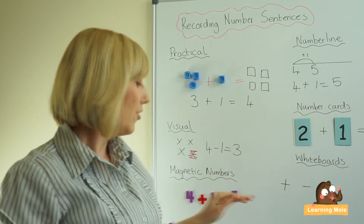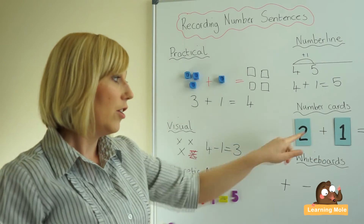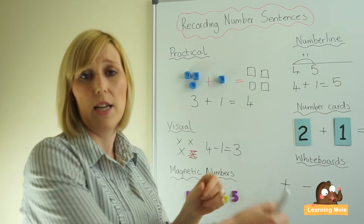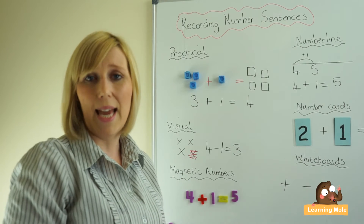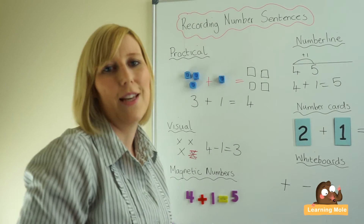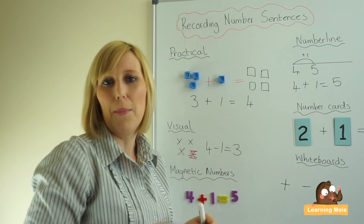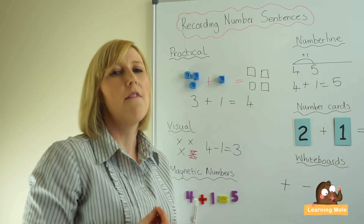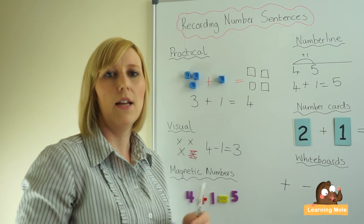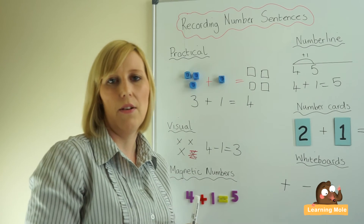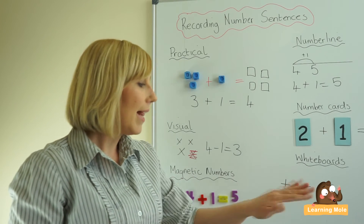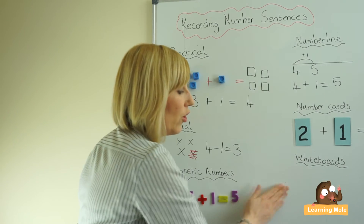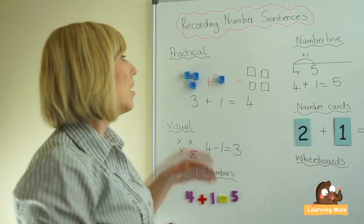Number cards are also a great way of introducing number sentences, just like magnetic numbers. You can even make plus, minus, and equals signs so children can lay them out on the table. It's a great activity where you can mix it up and say 'I've made a mistake — can you spot what the mistake is?' so that they really get a firm understanding of where the symbols go and how they're used.